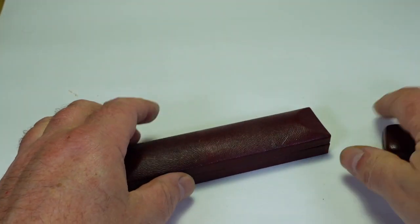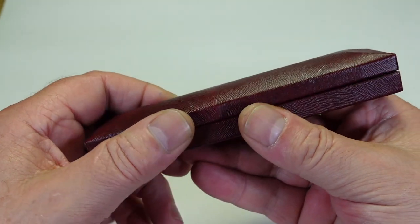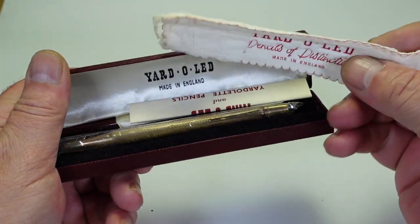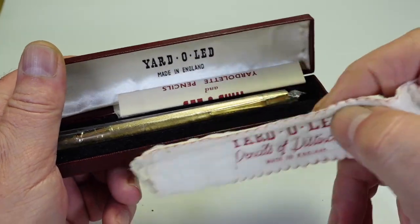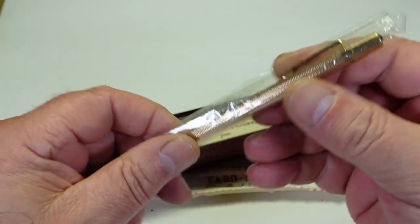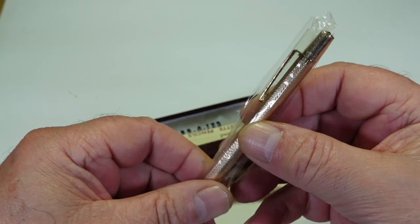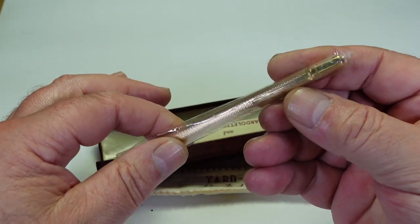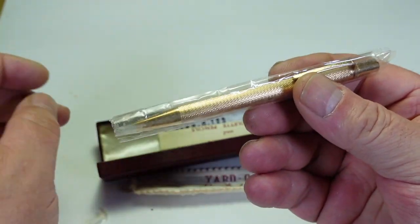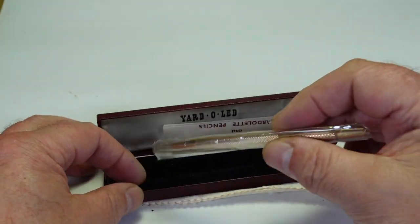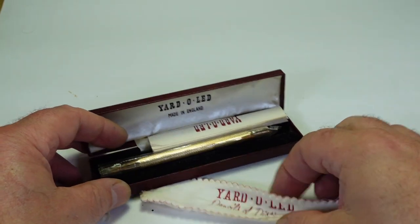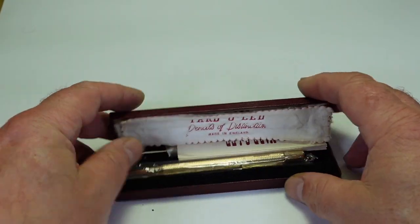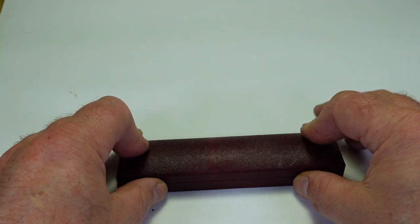And there we go, another Yard-O-Led. It's got this cleaning cloth, it's got the instructions, and this one, if you look at it, is still in the cellophane packaging. It's gorgeous, and it's a gold-filled Yard-O-Led. So you people that collect these Yard-O-Leds, if that is of interest to you, get in touch.